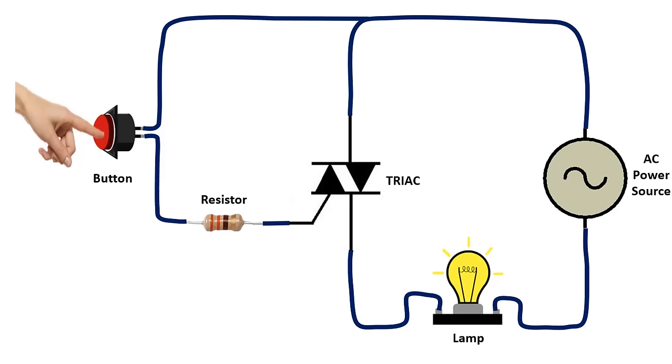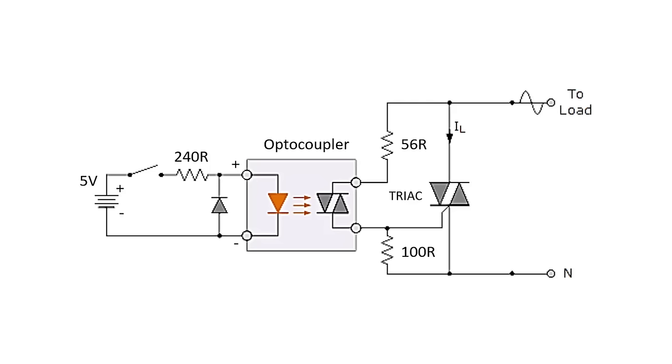However, if we are going to trigger with a DC source, we should not connect the DC source directly to the gate terminal, as in this example. If there is an optocoupler between the DC source and the gate pin, we can do it.